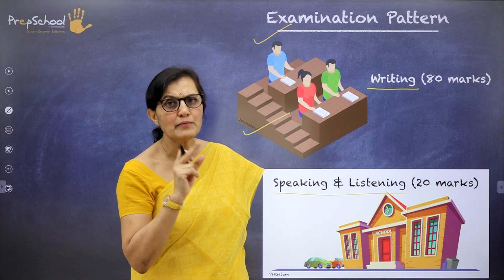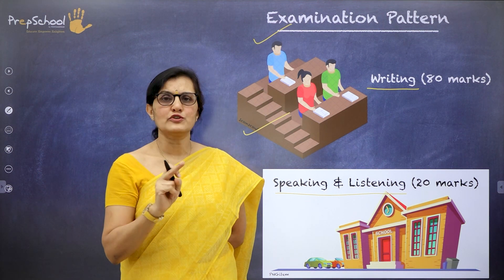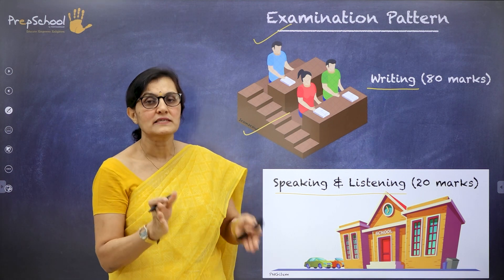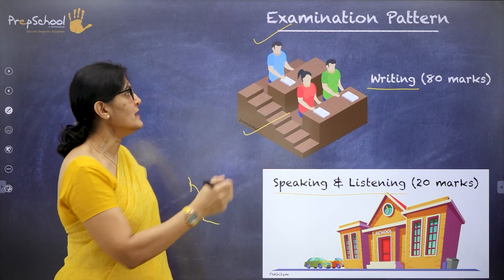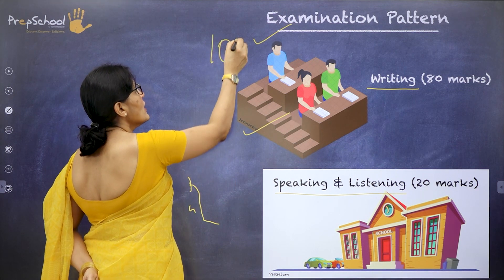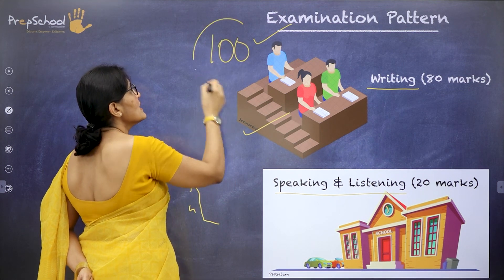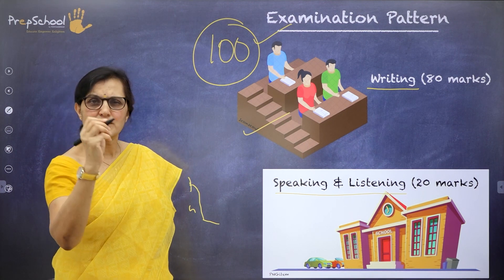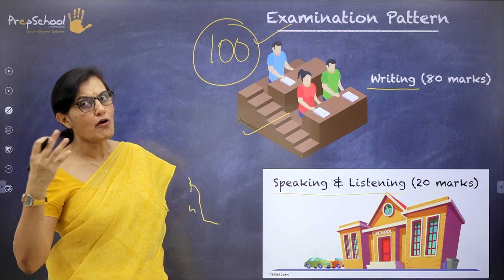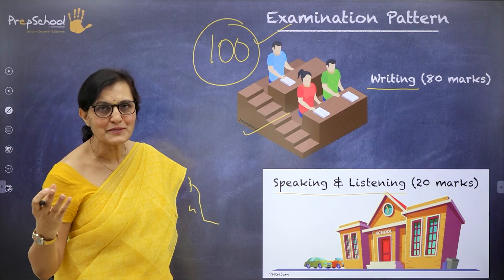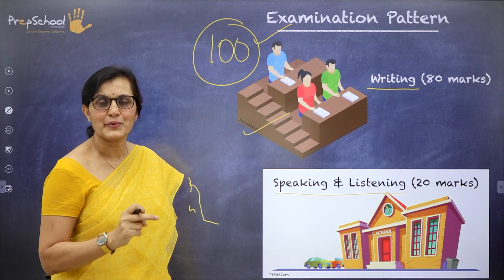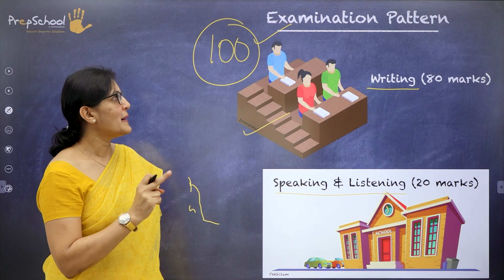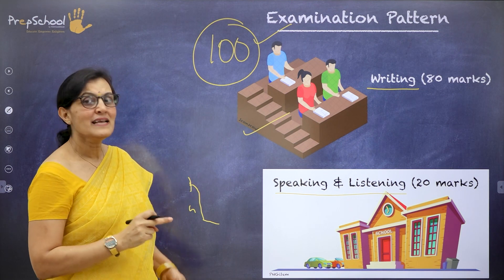For example, I am your school teacher and I will assess you for your speaking and listening for 20 marks. Both put together, you will be graded for 100 marks. Anything above 90, 95, 98, or even 100 — that is a challenge for you and that is the testimony of your success.